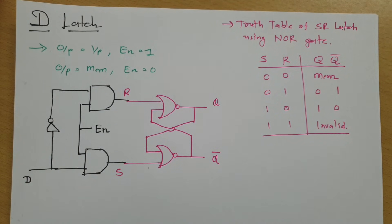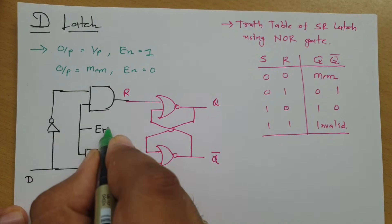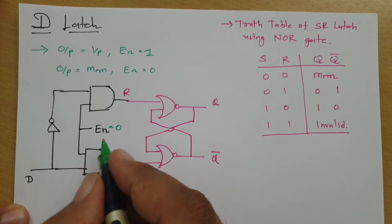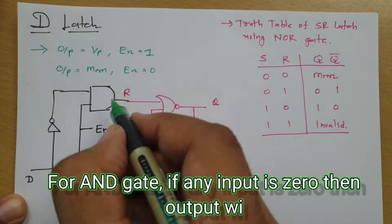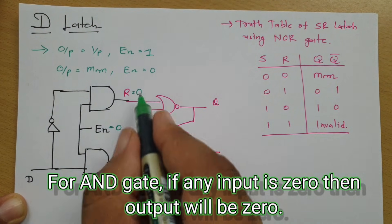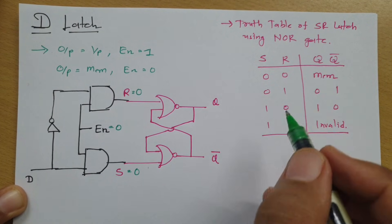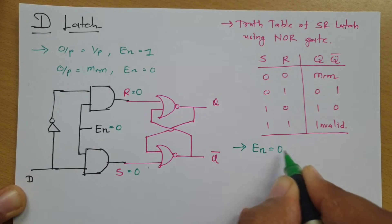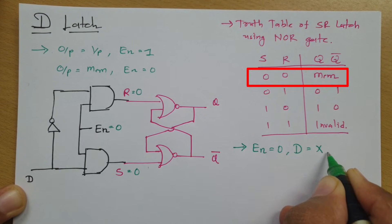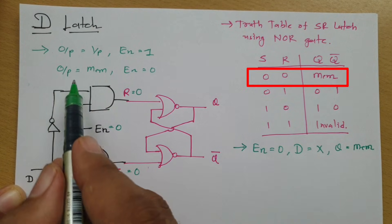Now one should know how this circuit functions. In the first case, I will consider enable equals 0. When enable equals 0, any input of 0 with an AND gate will result in S and R both equals 0 — no matter what the input D is. And as per the truth table, when S and R are both 0, Q and Q bar will stay in memory state. So in case 1, when enable equals 0, D is don't care and output Q stays in memory state — it stores previous data.